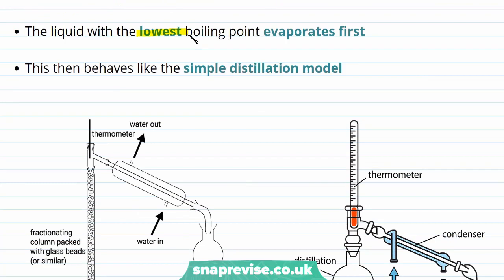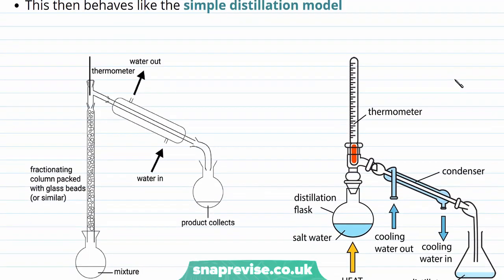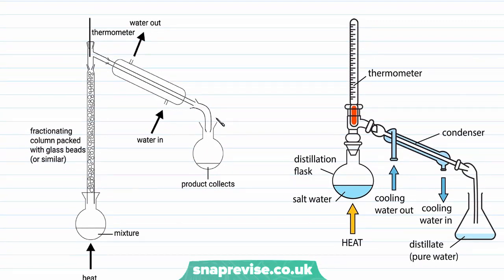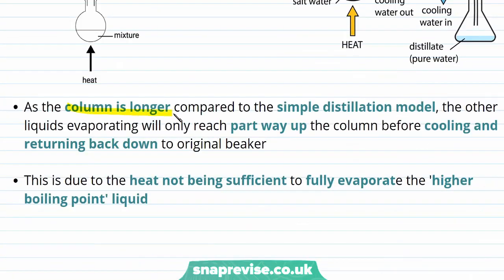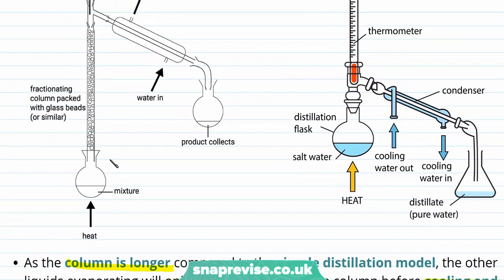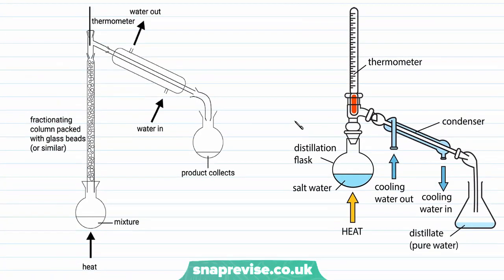The liquid at the lowest boiling point will always evaporate first, and in a very similar way to simple distillation, it will travel up the column and through the condenser where it will cool and reform as liquid in the product collection area. The important difference is that the column is much longer in the fractional distillation model. This means any other liquids evaporating will only reach partway up the column before they cool down and return to the original beaker, because the long column is very warm at the bottom but much cooler towards the top. The glass beads also add additional surfaces for vapours to cool on. Therefore, if the top of the distillation column has not reached the boiling point of a liquid, it will condense back down into the original flask rather than making it through to the product.